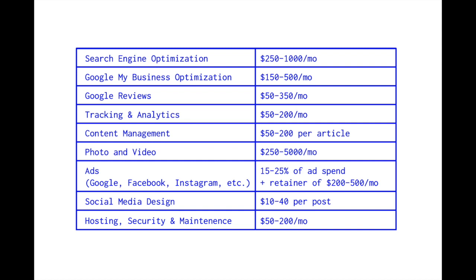The next thing is content management, which goes pretty well hand in hand with search engine optimization because you're going to have to continually bring new content to the website. You can also offer content management as a standalone service — a lot of people charge anywhere from fifty to two hundred dollars per article, or charge a monthly retainer for say two articles per month. This is a great way to either write those articles yourself if you're a good copywriter, or hire them out to other freelancers.